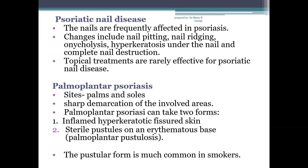Next is palmoplantar psoriasis, affecting the palms and soles with sharp demarcation of involved areas. It can take two forms: first, inflamed hyperkeratotic fissured skin, which can be very painful; and second, sterile pustules on an erythematous base, also known as palmoplantar pustulosis. This pustular form is much more common in smokers.